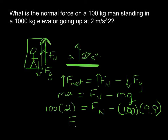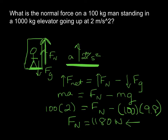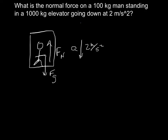We find that our normal force is 1,180 newtons. If our guy was standing on a bathroom scale — which basically measures your normal force — the scale would record 1,180 newtons, and his apparent weight would be heavier than his actual weight. You feel this when an elevator starts to go up: it pushes against the bottom of your feet even more. So does it matter if our elevator is going up or down? Yes, it does.